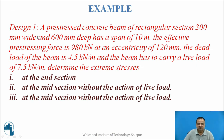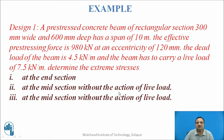Now let us take an example. A pre-stressed concrete beam of rectangular section 300 mm wide and 600 mm deep has a span of 10 meters. The effective pre-stressing force is 980 kN at an eccentricity of 120 mm. The dead load of the beam is 4.5 kN/m and the beam carries a live load of 7.5 kN/m. Determine the extreme stresses at the end section, at the midsection without the action of live load, and at the midsection with the action of live load.